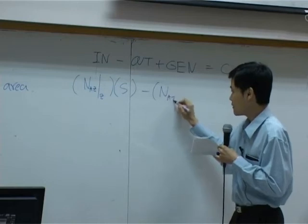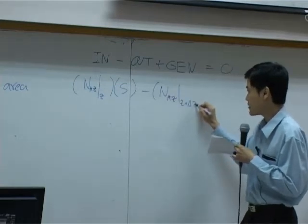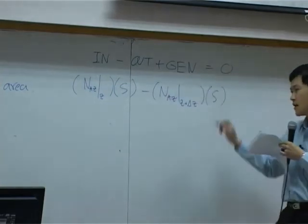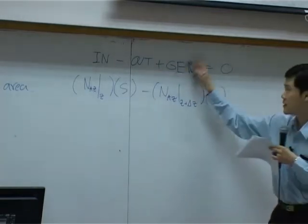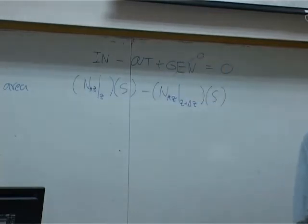Output is the flux at Z plus delta Z times cross-section area as well. Is there any generation? No generation term in this case because there is no reaction. It is simply just evaporation.